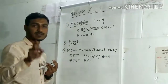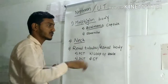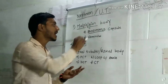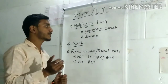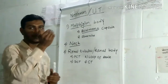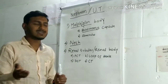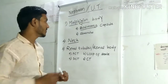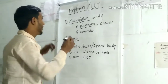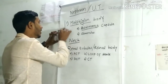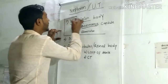The Malpighian body is itself made up of two parts: Bowman's capsule and the glomerulus. The glomerulus is a network of capillaries, and Bowman's capsule is the cup-shaped body present below the glomerulus, supporting it. We will make a separate video on the Malpighian body and learn about it in detail.